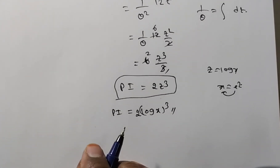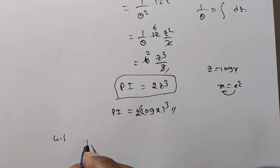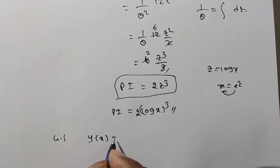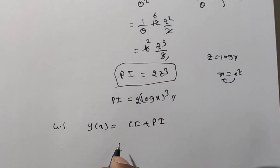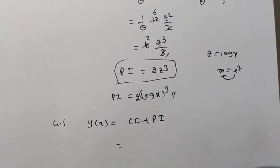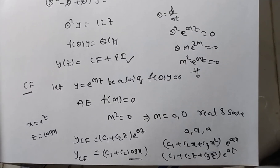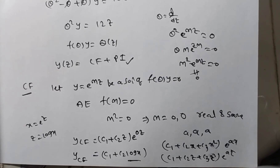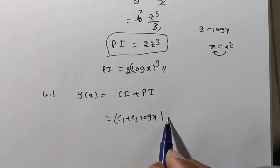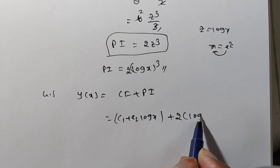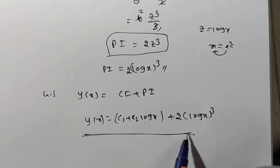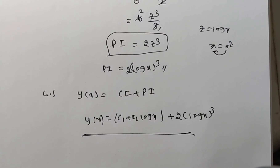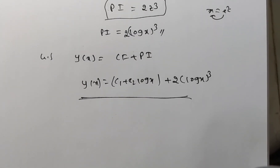The general solution is y(x) = complementary function + particular integral = c₁ + c₂ log x + 2(log x)³. This is the final general solution of the given differential equation.